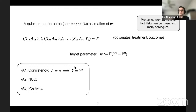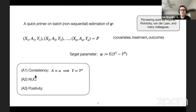Consistency can fail in settings with interference — for example, in a vaccine trial where someone can be immune just because their friends are immune, even if they weren't given the vaccine. We'll assume this holds for the remainder of the talk; it will hold in many settings, but you have to reason about it in the context of your problem.